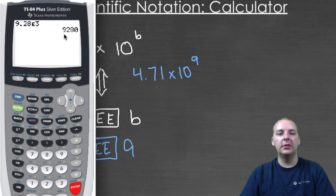One, two, three places to the right, and you get nine thousand two hundred and eighty.